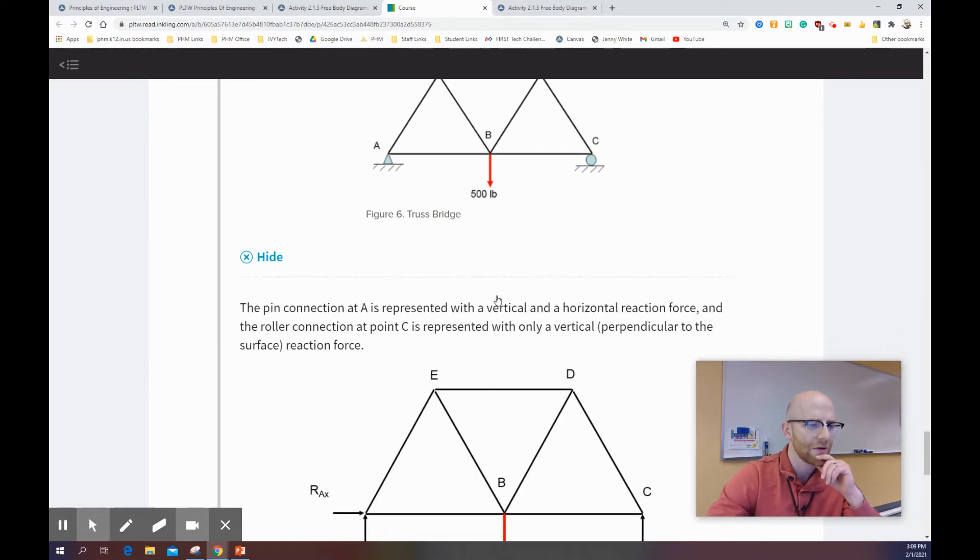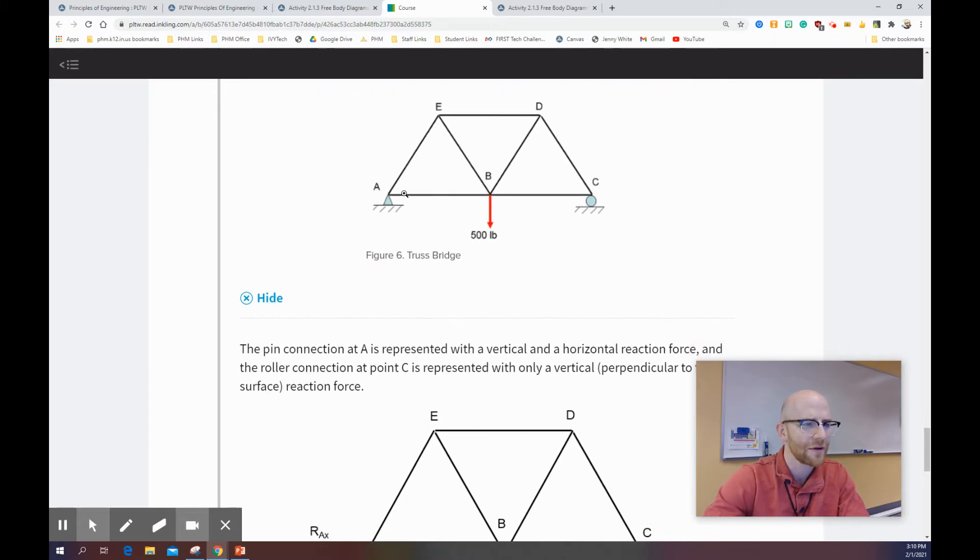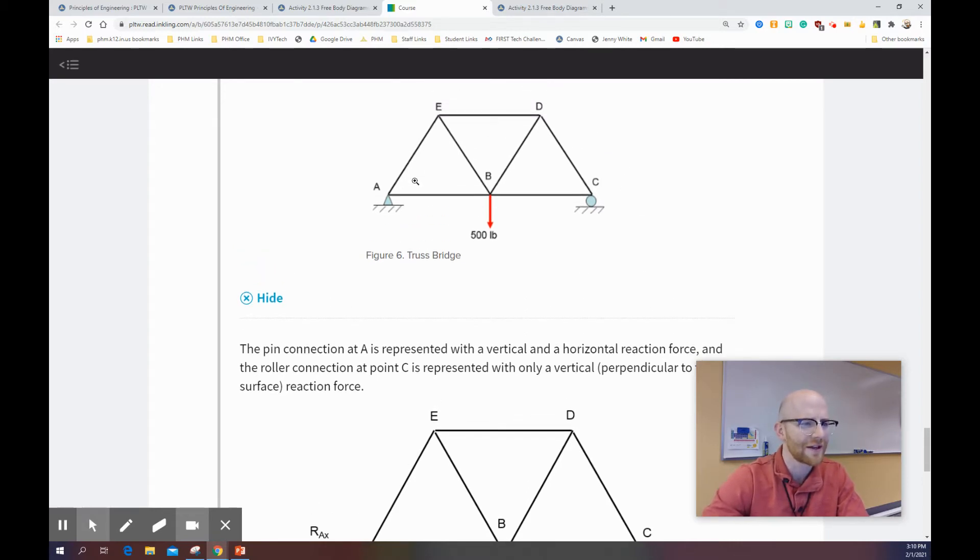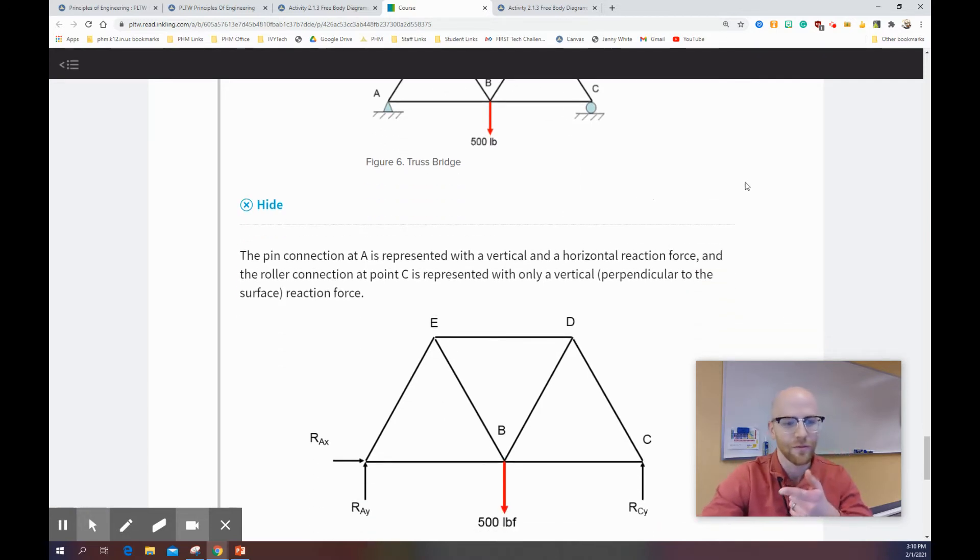So we take a look and we say, okay, the pin connection at A is represented with a vertical and horizontal reactionary force. And the roller connection at C is represented only with a vertical force. The point at C is a roller, so there won't be any horizontal force. It's meant to slide. So it's not trying to react to that force.